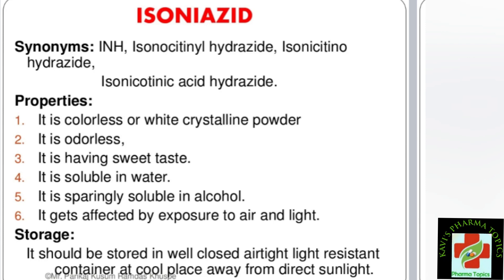Isoniazid is sparingly soluble in alcohol. It gets affected by exposure to air and light. For storage, it should be stored in a well-closed, airtight, light-resistant container at a cool place, away from direct sunlight.